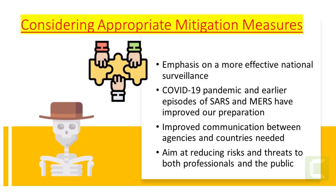Mitigation measures include strengthening public health surveillance and response activities, with an emphasis on more effective national surveillance of outbreaks of illness, including alert and response systems at all levels that can detect diseases that may be deliberately caused. The COVID-19 pandemic and earlier episodes of SARS and MERS have improved our preparation for handling the psychosocial consequences of the deliberate use of pathogens to cause harm. This includes having contingency plans in place for an enhanced response capacity by all sectors, with better communication between national, regional, and global agencies leading to improved assessments of vulnerability and effective communication about risks and threats to both professionals and the public.